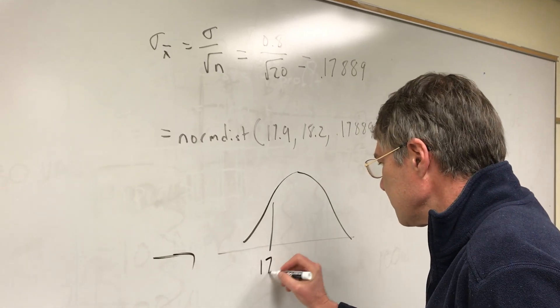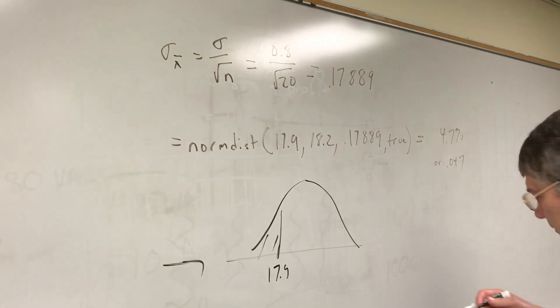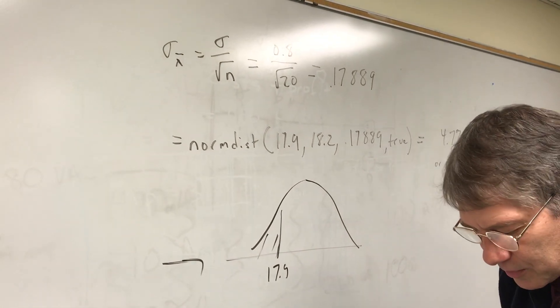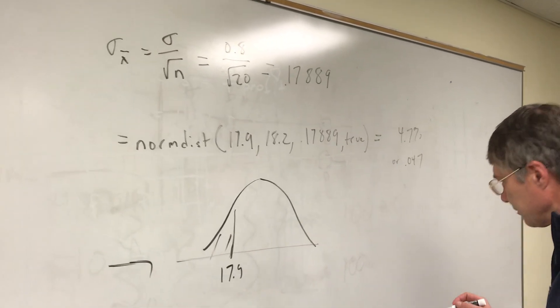Negative infinity up to our point of interest. Calculate that area. The question was, how do I do this by hand? The way you do that is use what's called a z-score.